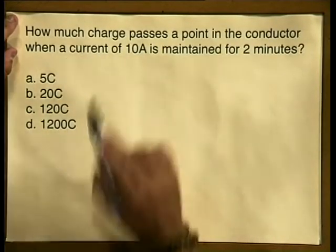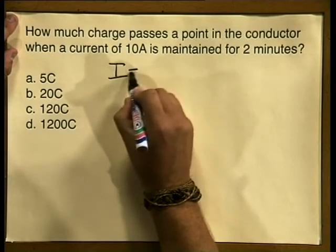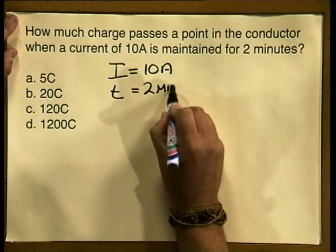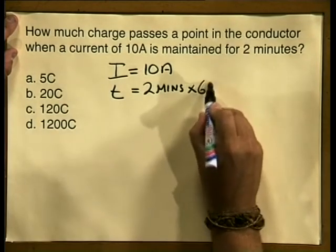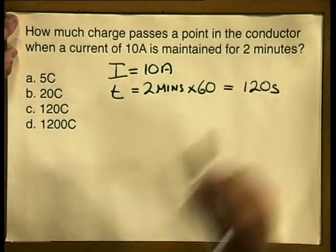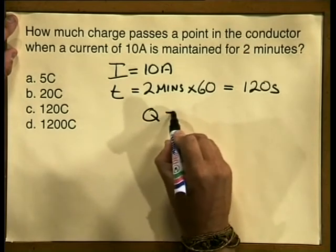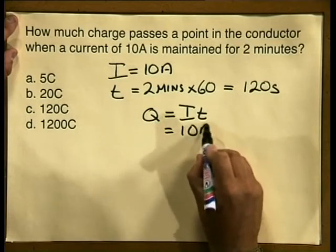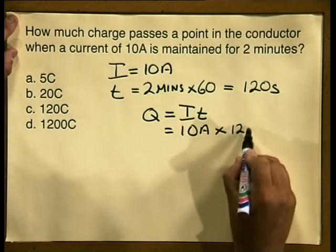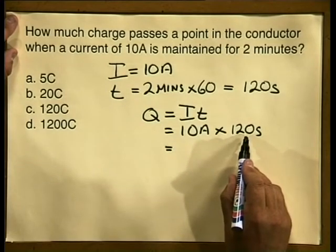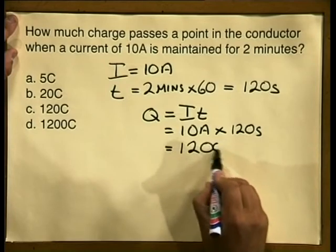Let us see why. We know there is a current of 10 amperes and a time of 2 minutes. We convert that to seconds by multiplying by 60 to give 120 seconds. Writing down the formula q is equal to i times t and substituting directly, 10 multiplied by 120 gives us 1200 coulombs.